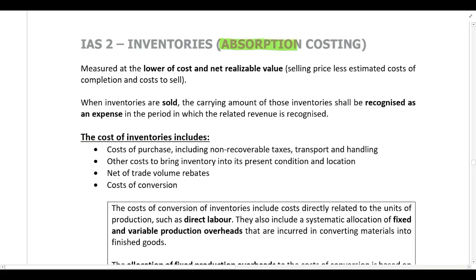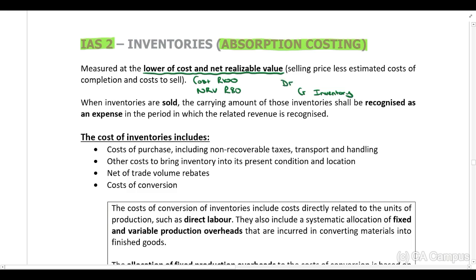Absorption costing complies with IAS 2, so let's go through the key requirements of IAS 2. First, inventory must always be measured at the lower of cost and net realizable value. For example, if inventory has a cost of 100 rand and a net realizable value of 80 rand, we write inventory down to 80 rand by crediting inventory and debiting cost of sales with 20 rand.